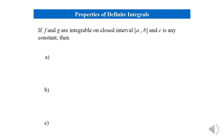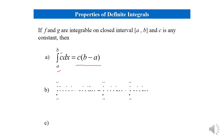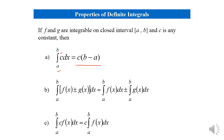Properties of Definite Integrals: If f and g are integrable on the closed interval from a to b, and c is any constant, then the integration of c dx from a to b equals c times (b minus a). Also, the integration of f(x) ± g(x) dx from a to b equals the integration of f(x) dx from a to b plus or minus the integration of g(x) dx from a to b. Then, the integration of c·f(x) dx from a to b equals c times the integration of f(x) dx from a to b.